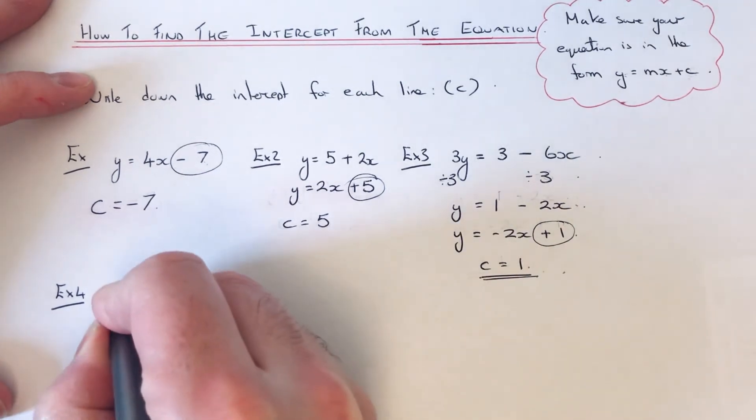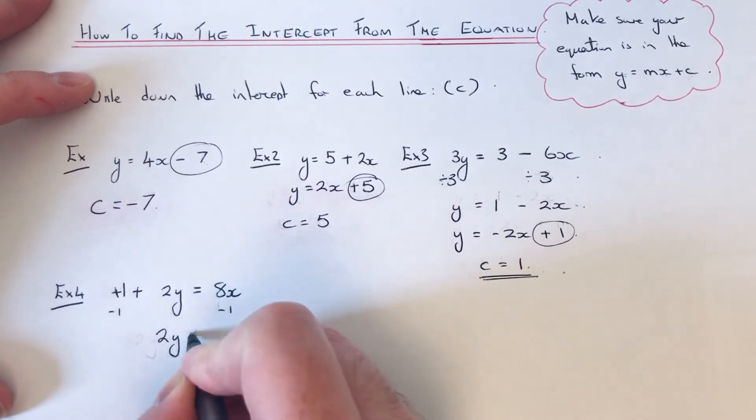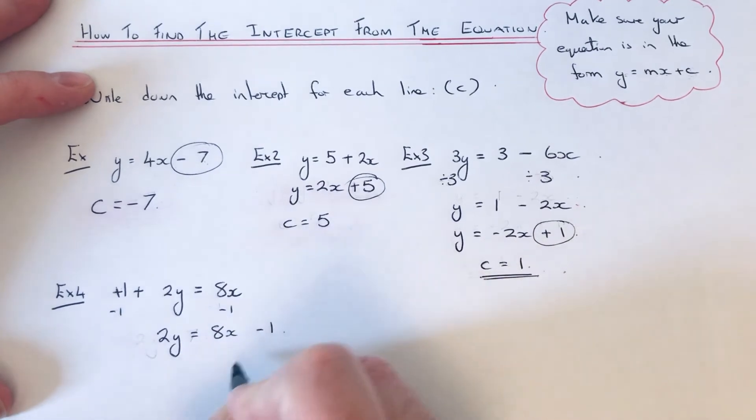If we get rid of this plus 1 at the front by taking 1 off both sides, that will give me 2y equals 8x minus 1.